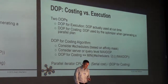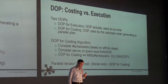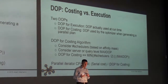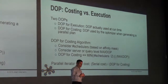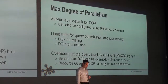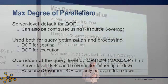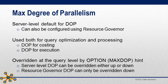That's pretty much how it works. In order to control parallel plan generation, you have to be able to control sometimes your costs. The maxDOP setting is server level, and it's also able to be configured by resource governor. It's used both for DOP for costing and DOP for execution. You can override at the query level by using OPTION MAXDOP N, which most of you have probably used at some point.